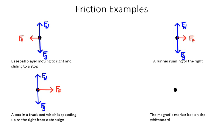The last example is the magnetic marker box on my whiteboard. You would think it's held up by magnets, but all the magnets really do is pull it inward — that arrow to the right represents the magnets. There would be a normal force opposing that, and then the thing that actually holds it up is friction. Since the whiteboard surface runs up and down, friction therefore acts up and down as well, because it's always parallel to the surface. Always keep that in mind.